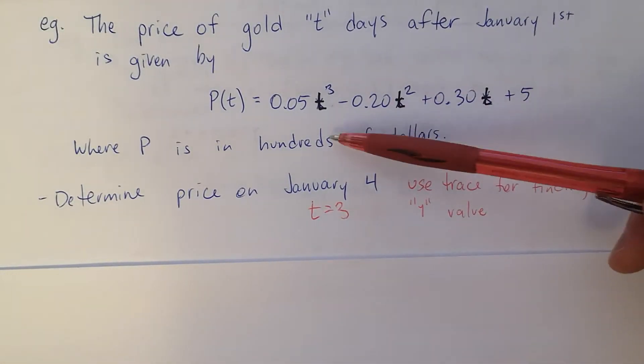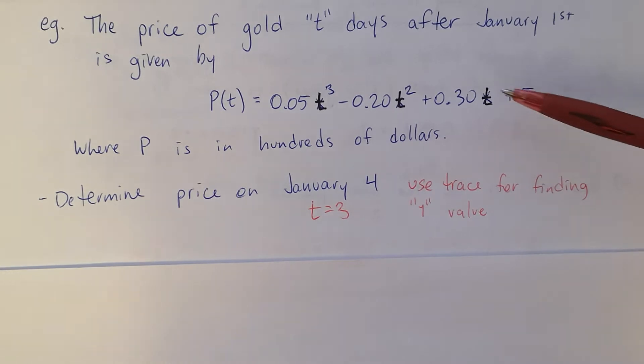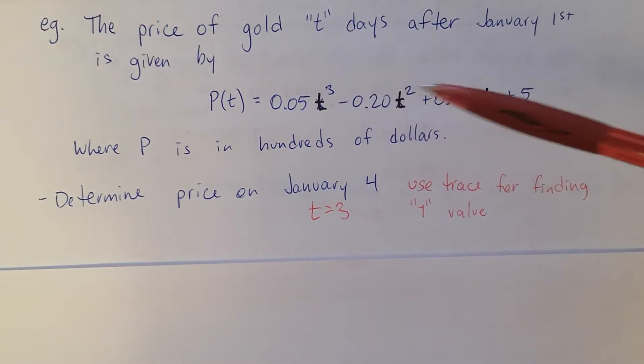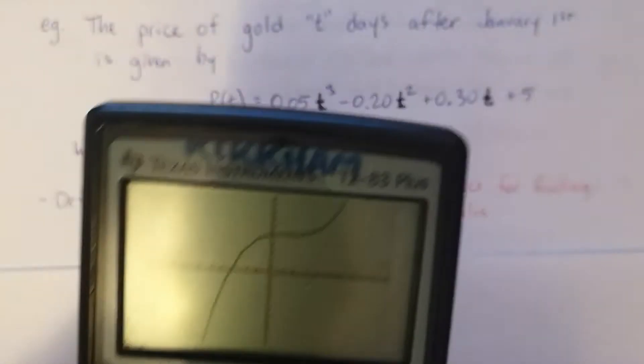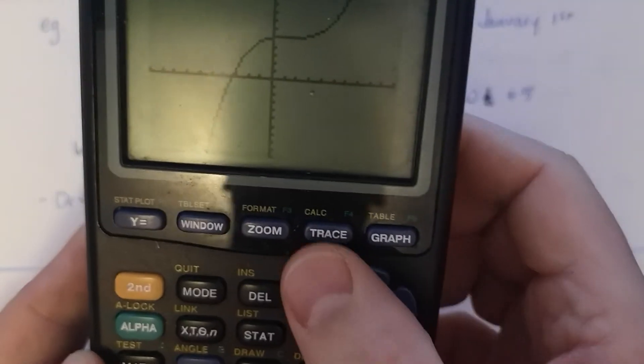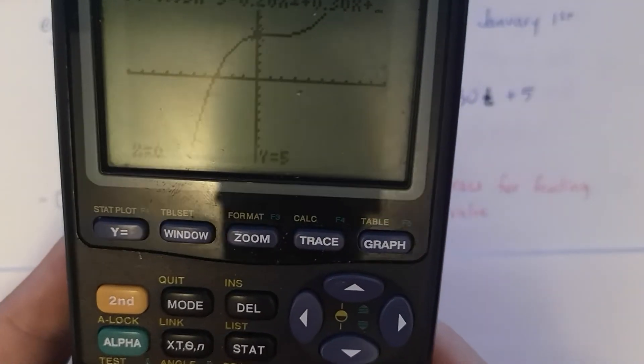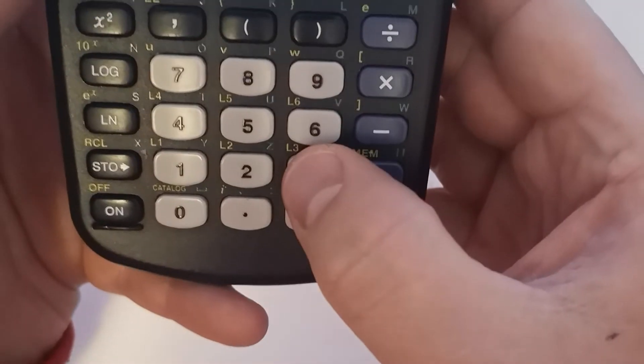Which means if you want to input things into the equation manually, you'd put in three, multiply, subtract, add all that. Or on our calculator, just hit trace, type in X equals three, just hit three, and then enter.